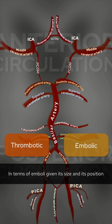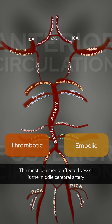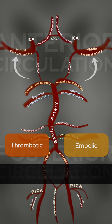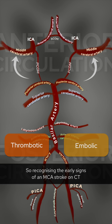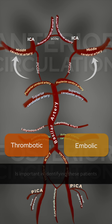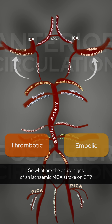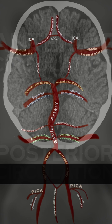In terms of emboli, given its size and position, the most commonly affected vessel is the middle cerebral artery. Patients may not always present with classic symptoms, so recognizing the early signs of an MCA stroke on CT is important in identifying these patients. So what are the acute signs of an ischemic MCA stroke on CT?